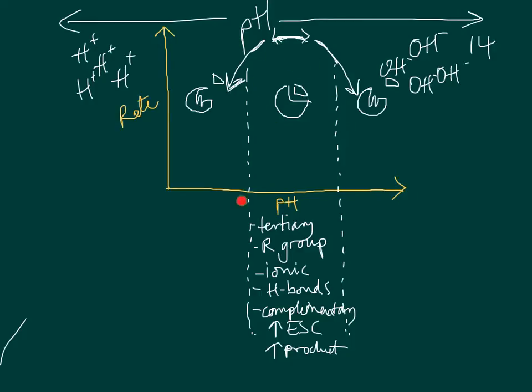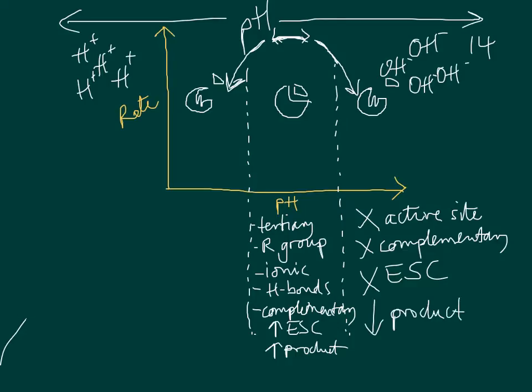But as we move away from that pH, it starts to affect the ionic bonding and the hydrogen bonding. And as a result of that, I'm just going to put it in the high pH section, but it's equally applicable to the low pH section. What we'll have is the active site changing shape, and it's no longer complementary to the substrate. And as a result of that, we have reduced rate of formation of the enzyme substrate complex, and therefore a decrease in the rate of product formation.